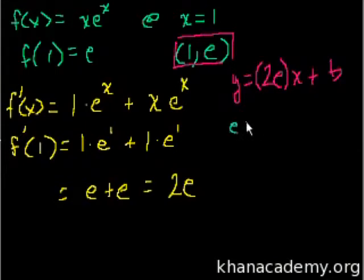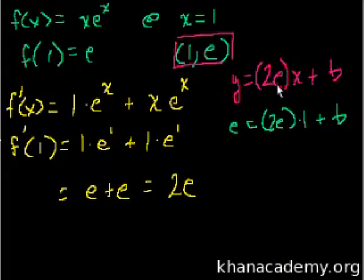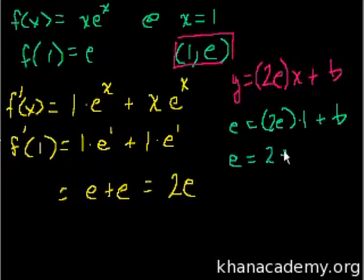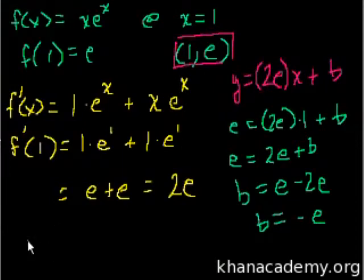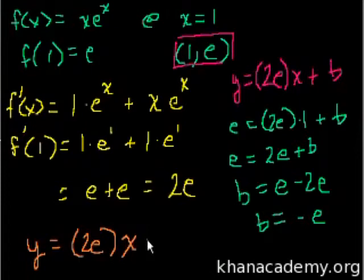So let's substitute the point (1, e) back into the equation and solve for b. y = e equals 2e times 1 plus b. Note that e is a number, like pi — you could substitute 2.7, but we keep it as e because it's cleaner. So we get e = 2e + b. Subtracting 2e from both sides: b = e - 2e, so b = -e. Now we're done. The equation of the tangent line is y = 2ex - e.